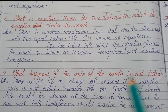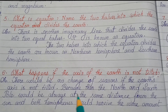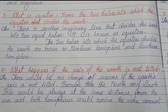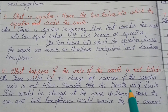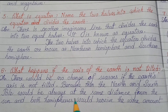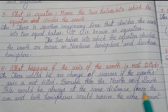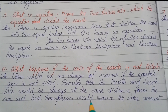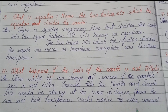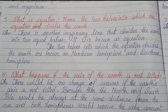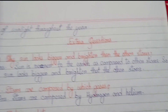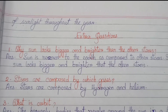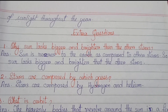Number six: What happens if the axis of the earth is not tilted? There would be no change of seasons if the earth's axis is not tilted, because then the north and south poles would always be at the same distance from the sun, and both hemispheres would receive the same amount of sunlight throughout the year.